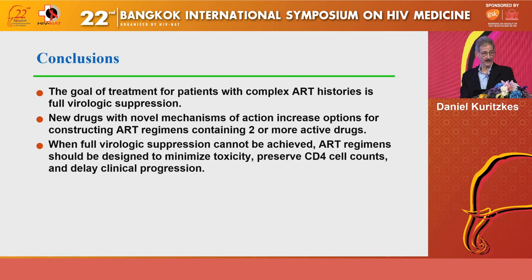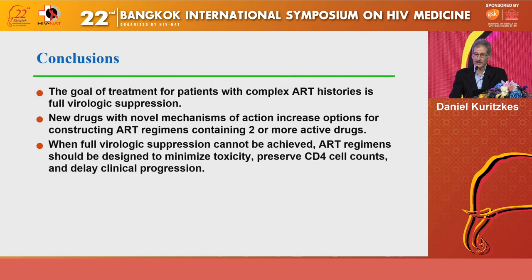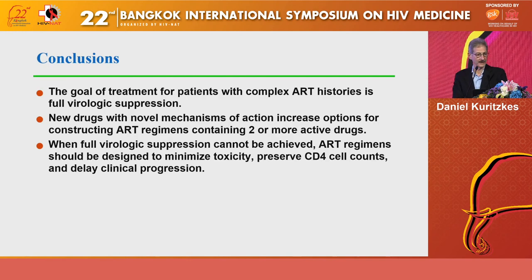The goal of treatment for patients with complex antiretroviral treatment histories is full virologic suppression, as it is for initial therapy. New drugs with novel mechanisms of action increase our options for constructing regimens containing two or more active drugs. But even when full virologic suppression can't be achieved, regimens should be designed to minimize toxicity, preserve CD4 counts, and hopefully delay clinical progression while waiting for the next new drug. Thank you for your attention, and I hope you enjoy the remainder of the conference.